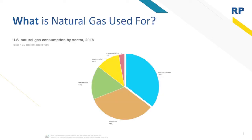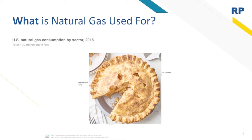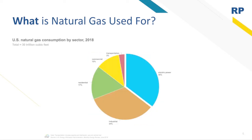Now that you know what natural gas is and where it comes from, the next logical question is: what do we use it for? In this handy pie chart, you can see that the biggest slice of demand for natural gas is electric power at 35 percent, then industrial factories at 34 percent of demand, residential use at 17 percent, commercial at 12 percent, and transportation at a mere 3 percent of demand.